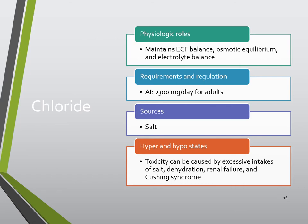Chloride's physiologic role is to maintain extracellular balance, osmotic equilibrium, and electrolyte balance, similar to sodium except that chloride is negatively charged. The average intake is 2,300 milligrams per day for adults. Large concentrations of chloride are present in gastric secretions, which are important for protein digestion, creating an acidic environment to inhibit bacterial growth, and enhancing iron, calcium, and vitamin B12 absorption. Conditions like heavy sweating, chronic diarrhea, vomiting, or chronic renal failure can precipitate hypochloremia.